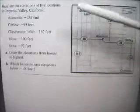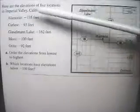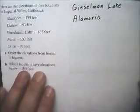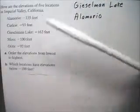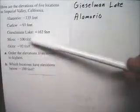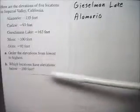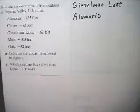Which locations have elevations below -100 feet? Alomarillo does, and Gesellman Lake. You might be tempted to list Moss, but Moss is not below negative 100 feet. It's exactly at negative 100 feet, so it's not below it.